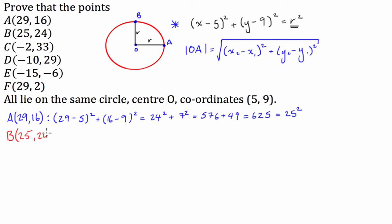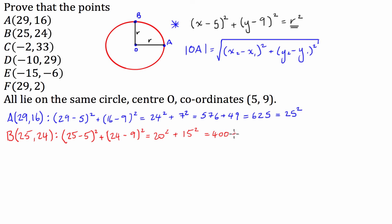Now point B is (25, 24). Again I'll plug it into the same formula: (25 − 5)² + (24 − 9)² = 20² + 15² = 400 + 225 = 625, which is 25 squared. So you can see that A and B are both the same distance away from O, so they both lie on the same circumference of this circle. We do the same method — I know it's tedious — for each of C, D, E and F.